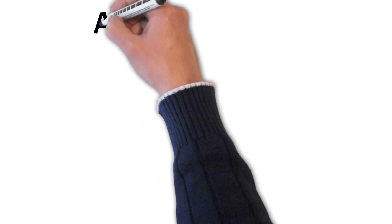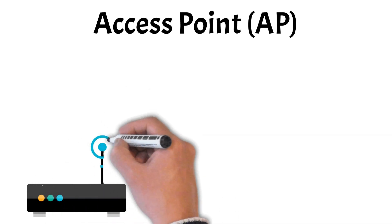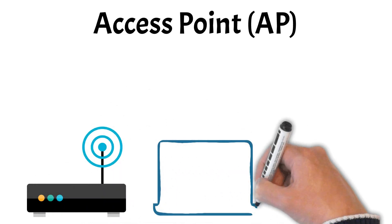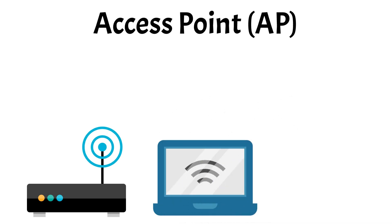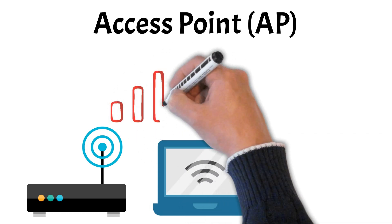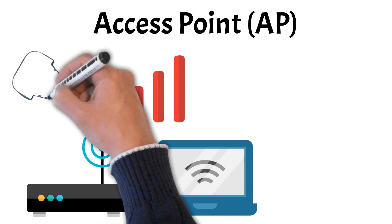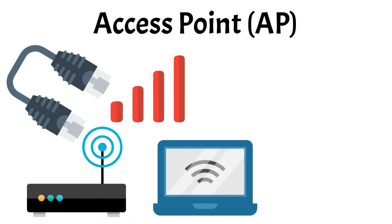Next, let's take a look at access points or APs. An access point is a device that plays a crucial role in expanding your wireless network. While many routers come with built-in Wi-Fi capabilities, access points are specifically designed to extend wireless coverage in areas where the router's signal may be weak or inconsistent. They connect to the router using Ethernet cables, allowing them to broadcast a strong Wi-Fi signal over a larger area.